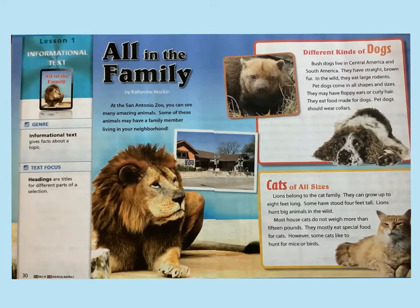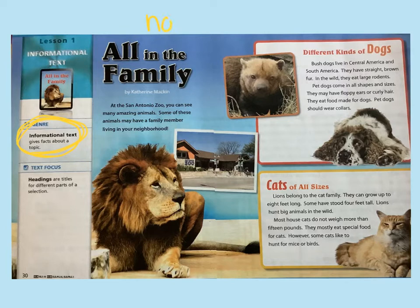Today we are going to read an informational text. You can see it says that over here where it says genre. An informational text gives facts about a topic. Another word we use to call this type of text is nonfiction. So it's not made up — it's real, talking about real things.